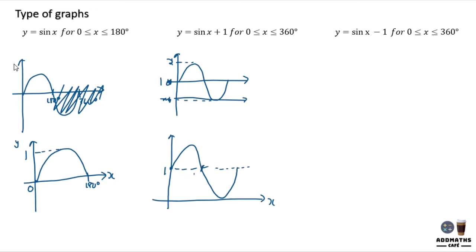The graph goes down, touches the x-axis, and goes up. This point was your original x-axis. At this point it will be 180 degrees. Goes down from here, and it will be 360 degrees back here. So this will be your maximum of 2, and this will be your minimum of 0. Add the y label.